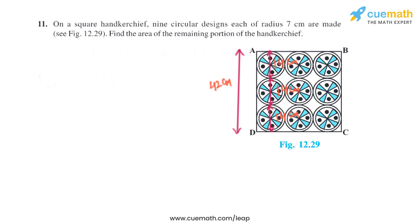We know the formula to find the area of a square, that is side squared. We have got the side as 42 centimeters, so it will be 42 squared. On solving this we will get 1764 square centimeters. That is the area of the square.